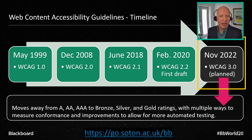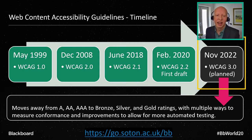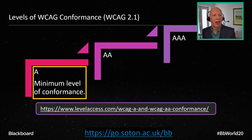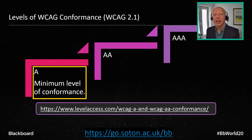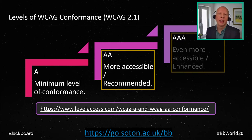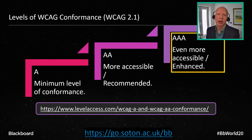Those three conformance levels — a bit like batteries — are A, AA, and AAA. A is the minimum level, AA is the recommended level, and that's what regulations tend to refer to. There's also the enhanced AAA level. I mentioned POUR: Perceivable means catering to our senses — for example, alternate text tells us the meaning of an image we can't see. Operable means we should be able to use the site not only with a mouse but also with a keyboard or assistive technology.